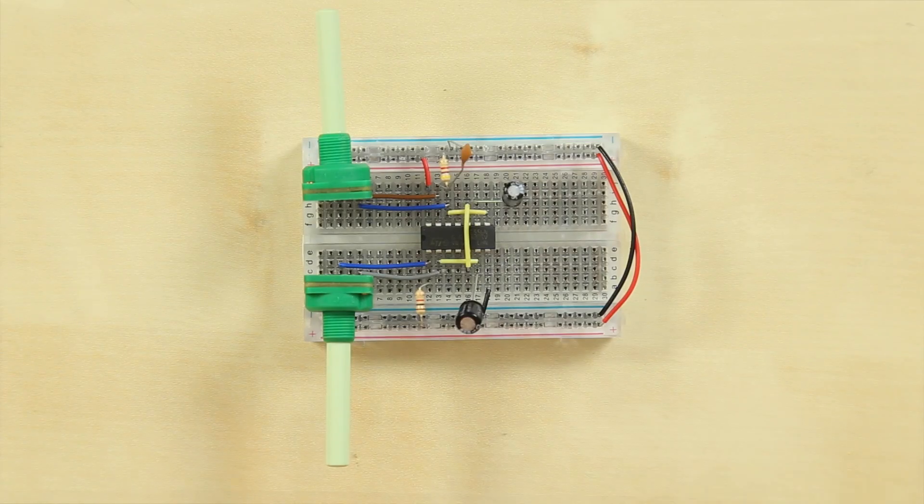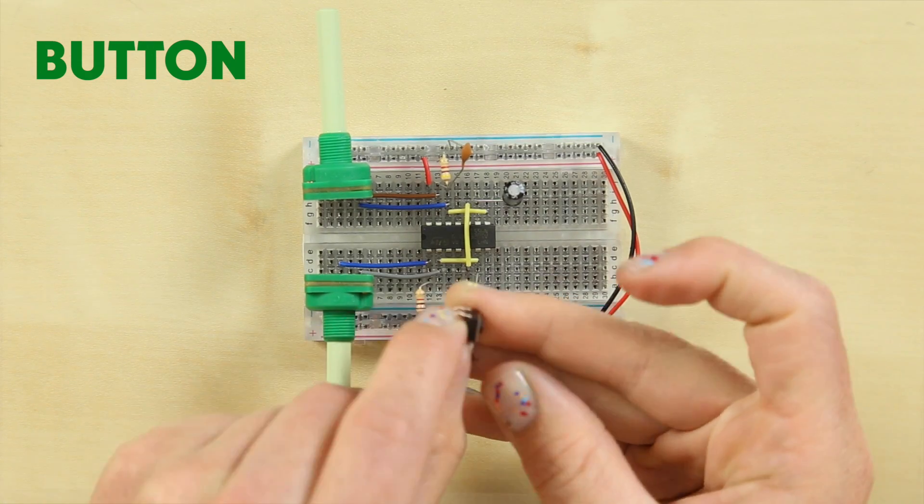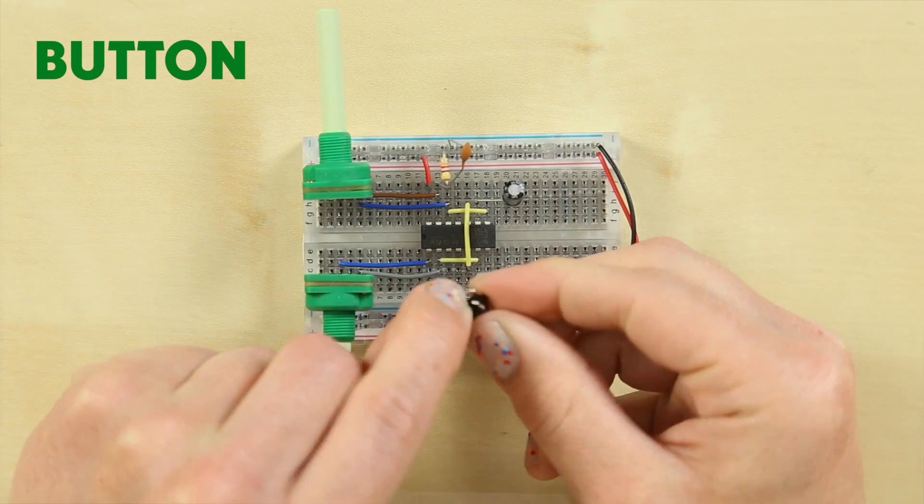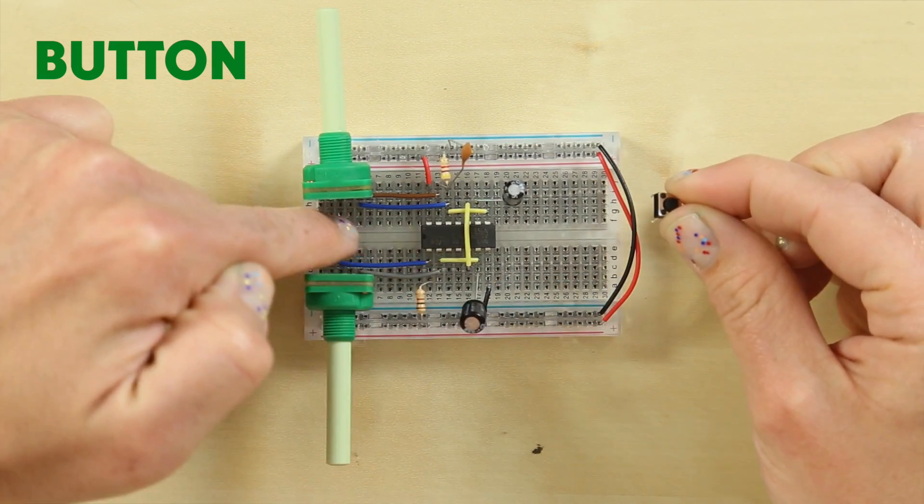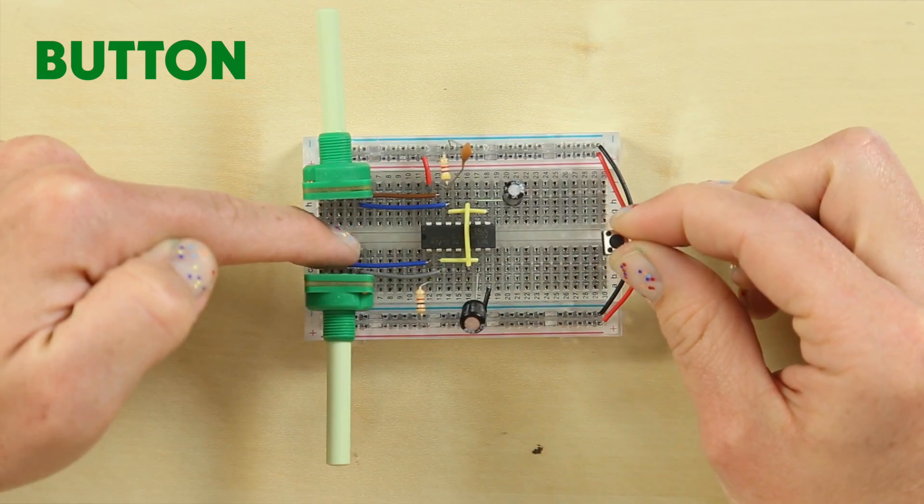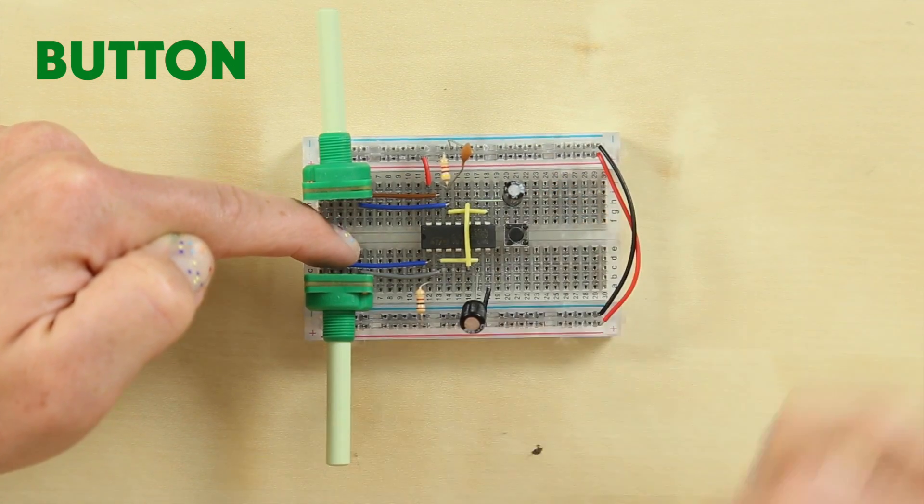The next component you're going to need is your button. This will help turn your stutter synth on and off. At the top it has a switch and at the bottom it has four legs. Place the button over the central gutter, the gap in the middle of your breadboard just underneath the IC chip with one space in between like so.